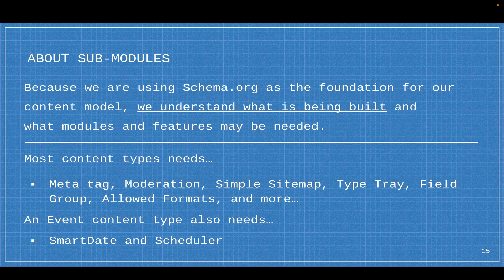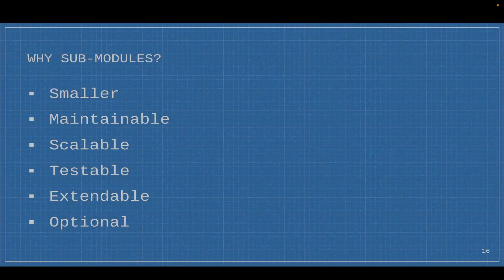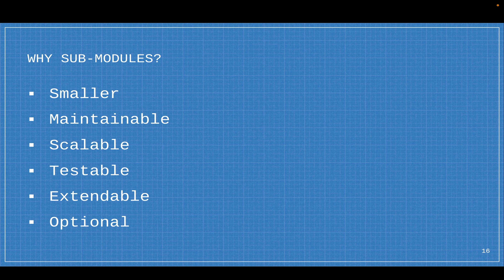All content types need meta tags. We can even say we'll exclude certain content types. The best example: an event content type should use smart date and probably the scheduler to publish and unpublish that event based on the date. Why sub-modules? They're smaller and more maintainable. They're scalable because when you isolate a small component, you can keep building on it. They become very testable — we can test a specific integration point. This all leads to a lot of extendability. Because of this sub-module architecture, there are tons of great hooks in the core that allow you to alter, enhance, and define everything. Every sub-module is optional. For example, there's a JSON-LD integration module — that is optional. If you're not exposing your Drupal application to the web, don't use that module. But most sites will need it.